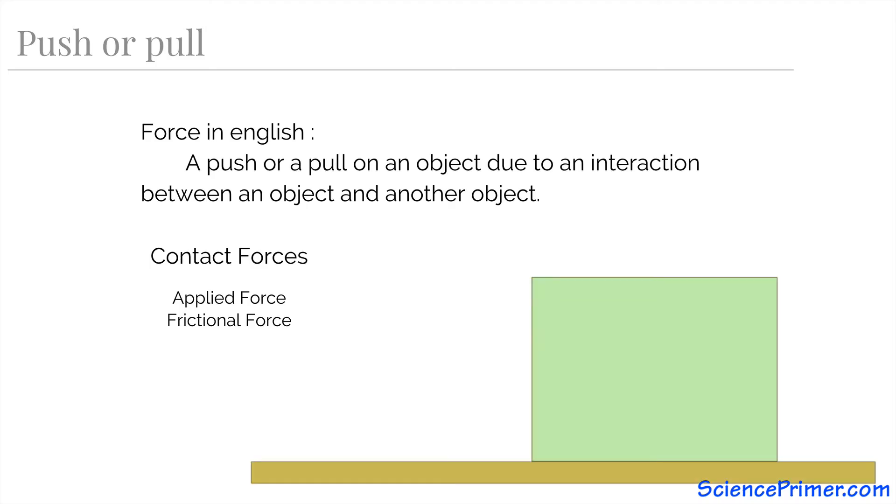A second type of contact force is friction. Frictional forces are generated when one object is pushed or pulled along a surface. As a force is applied to an object or an object's existing inertia moves it across a surface, the third law of motion requires that the surface push back on the object. This is friction.